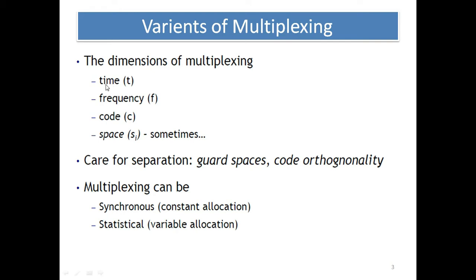The first parameter is time — time is very important for multiplexing. Second is frequency. Third is code. Fourth is space. In this way, there are a variety of dimensions along which we are able to design multiplexing.